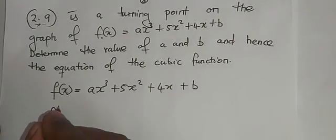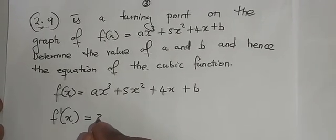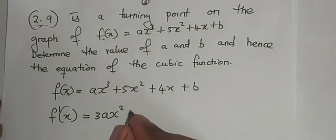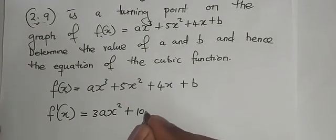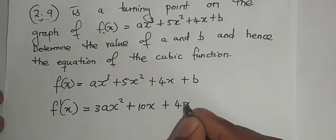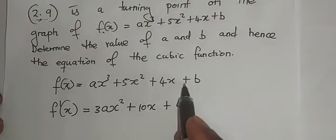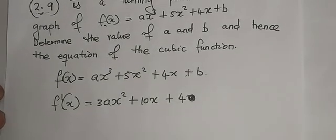Which means f'(x) will be equal to 3ax² plus, in this case, 10x plus 4. We differentiate 4x, we get 4, then b, we differentiate b, since it's a constant, we get 0.